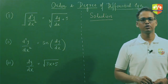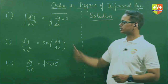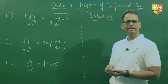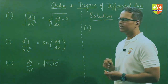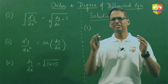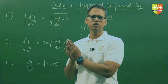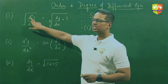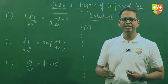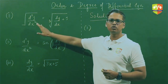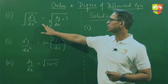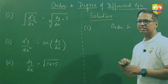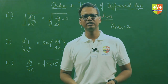Now let us solve the practice questions. For question 1, we need to find the order and degree. Finding the order is simple: we identify the highest differential coefficient of y with respect to x in the equation, which is clearly d²y/dx². So the order is 2.